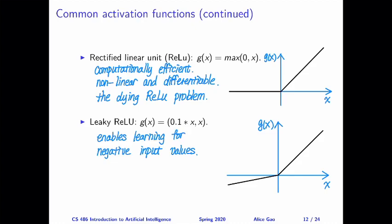That's everything I want to say in this video. Let me summarize. After watching this video, you should be able to: describe the simple mathematical model of a neuron and explain why a neuron is a linear classifier; describe some desirable properties of an activation function; give four examples of activation functions; and compare and contrast the properties of these activation functions. Thank you for watching. I will see you in the next video. Bye for now.